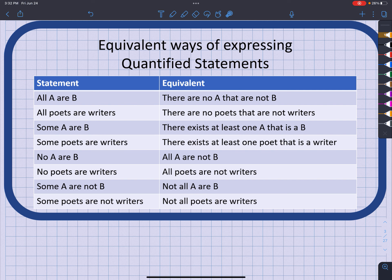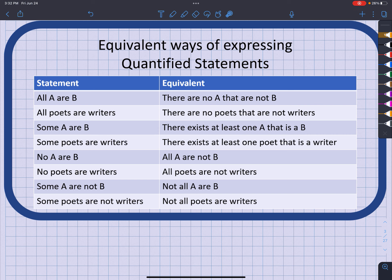'Some A are B' is equivalent to 'there exists at least one A that is a B.' In words using a sentence: 'some poets are writers' is equivalent to 'there exists at least one poet that is a writer.'